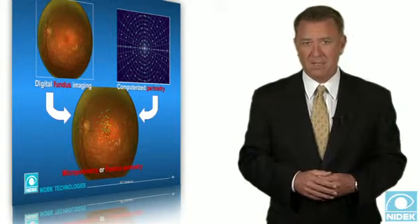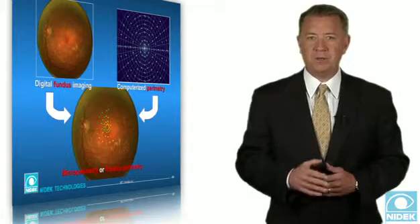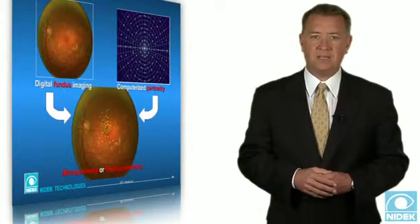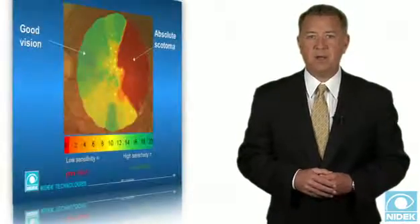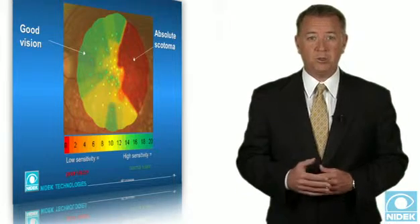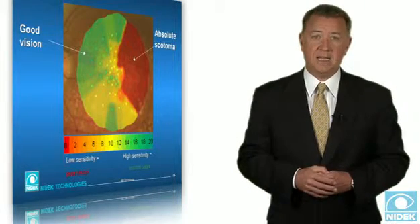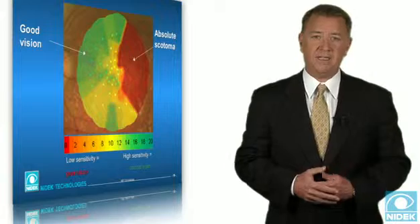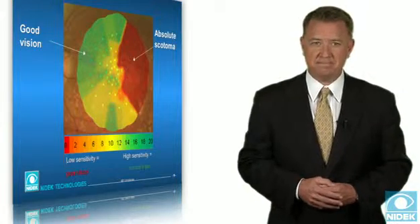Microperimetry is, at the moment, the only examination that allows putting into correlation, in an objective way, the morphological aspects of the retina with the corresponding functional aspects. Such information has been demonstrated to be extremely useful in clinical practice for diagnostic purposes.